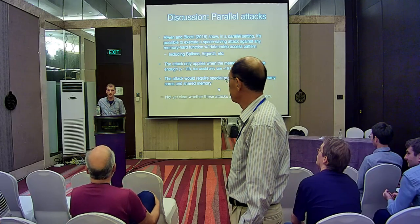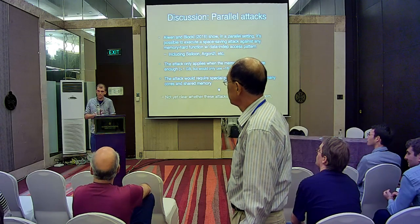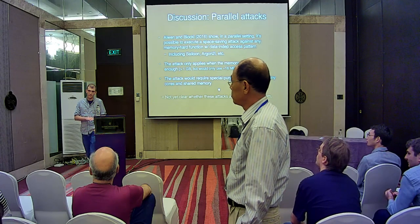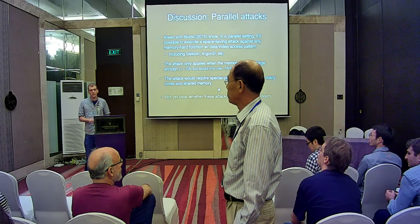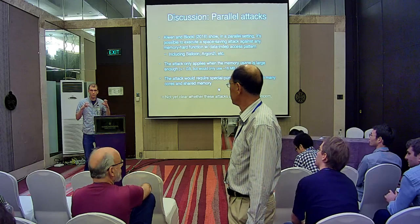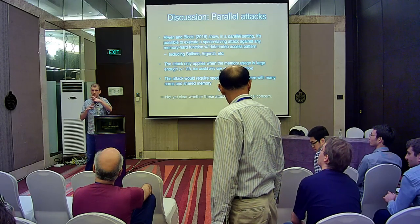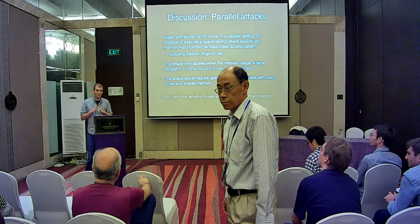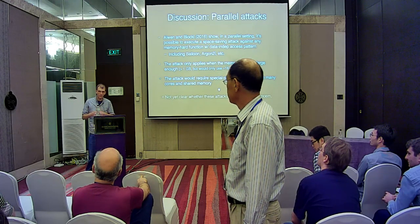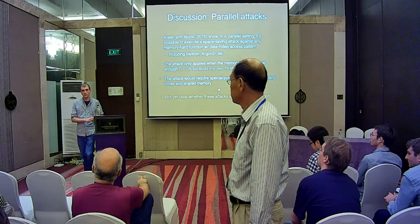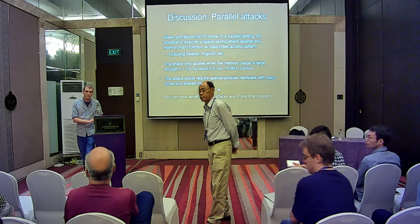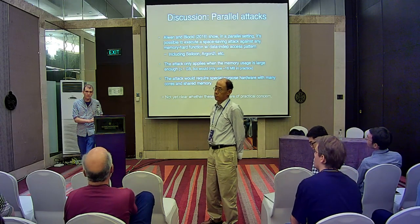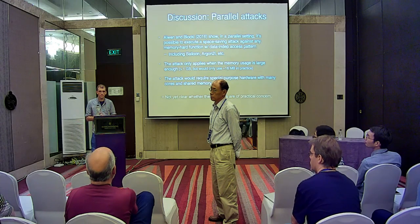Question: You mentioned parallel architectures with many cores and shared memory — isn't that basically what a GPU does? You can have thousands of cores and rather large shared memory. Response: It's not quite SIMD computation, which is what GPUs are better at. You could conceivably coerce a GPU into doing something like this, but for the attack to work the key thing is shuffling very large buffers around the chip, and GPUs are not very good at that. But it's totally conceivable you could make such a thing work.